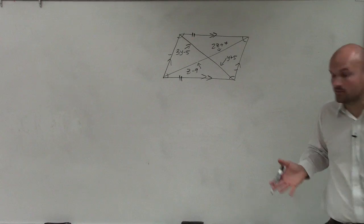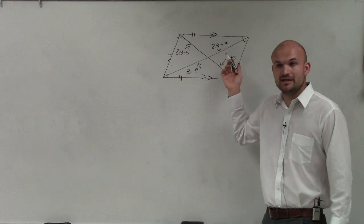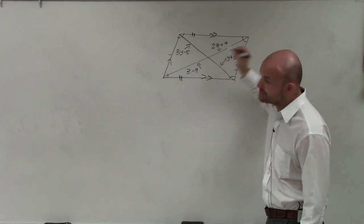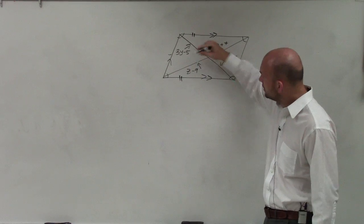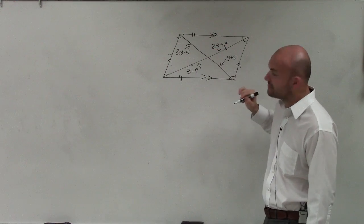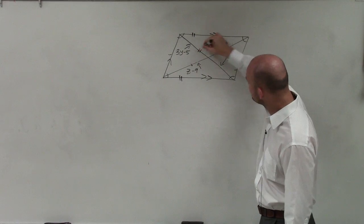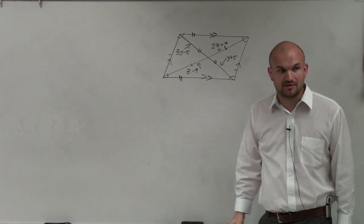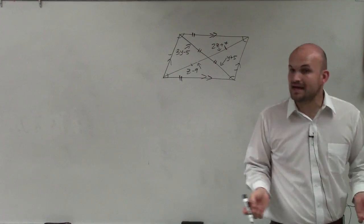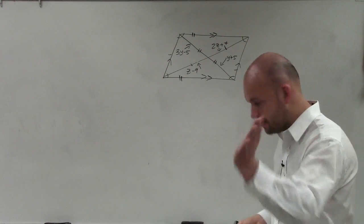And then we start talking about the diagonals. So what happens with the diagonals? Well, the diagonals are not necessarily equal, but the diagonals do bisect each other. That means this diagonal cuts this diagonal in half. This diagonal cuts this diagonal in half. Very important for you guys to understand that. Now you can go.